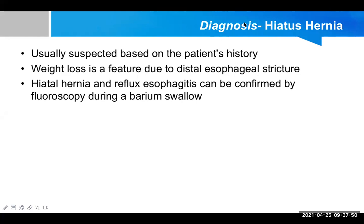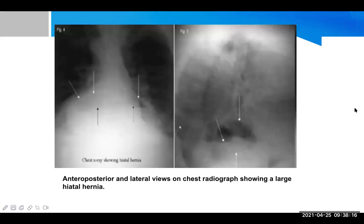On chest X-ray, an anterior-posterior and lateral view can show a large hiatal hernia. This is not a barium swallow X-ray — barium swallow will be shown separately. On the plain chest X-ray, there is a cardiac shadow in the thoracic cavity, and some air shadow is present there. The question is why air shadow is present there — it indicates that some abdominal organs have herniated up. This is confirmed by barium swallow X-ray.